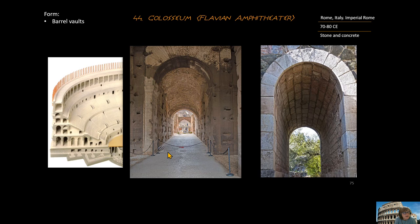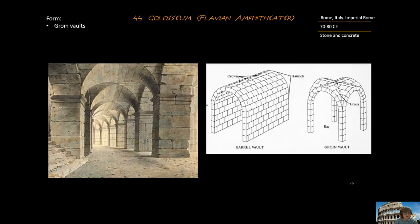Another form associated with the Colosseum is the barrel vault. A barrel vault is simply multiple arches put together. The arches underneath the seating in the Colosseum are what hold the structure up — it is the structure upon which the Colosseum rests.